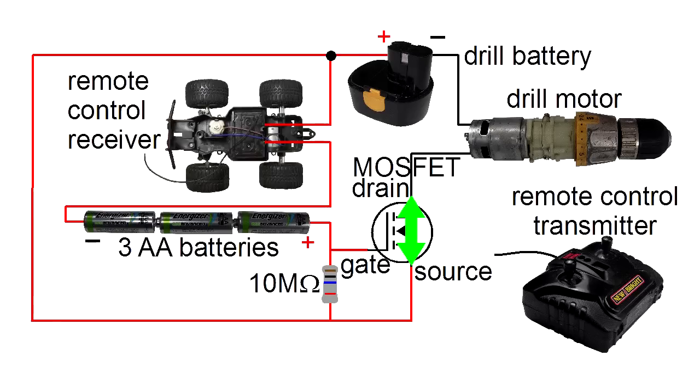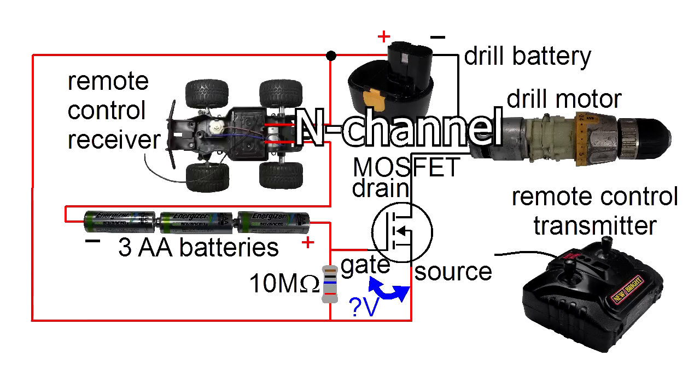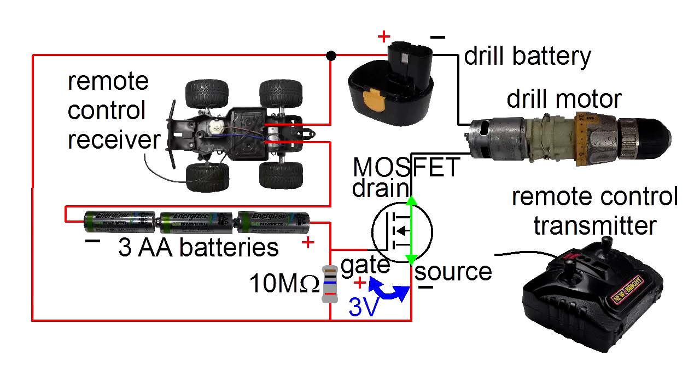To get current to flow between the drain and source, we need to have a few volts between the gate and source. Since this is an N-channel MOSFET, we need the gate to be positive with respect to the source. The higher the voltage, the lower the resistance between the drain and source and the higher the current. The amount of voltage needed and the resistance you get depends on which MOSFET you have.